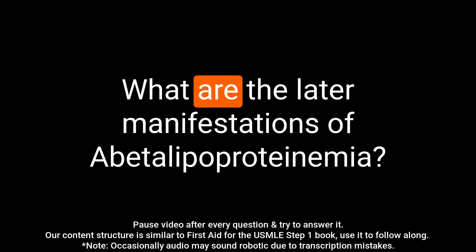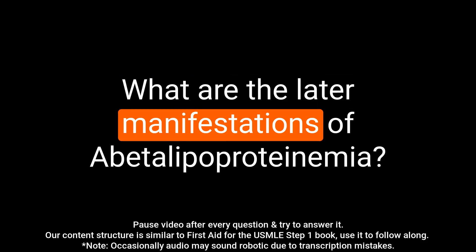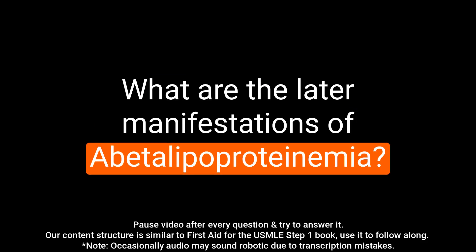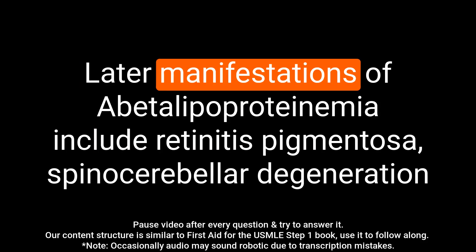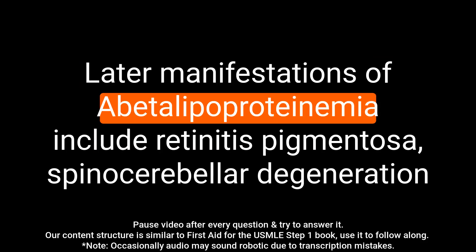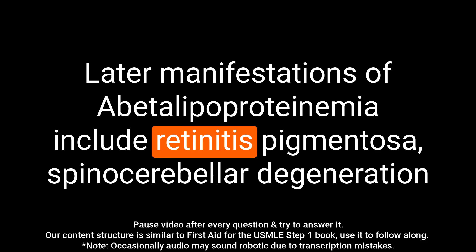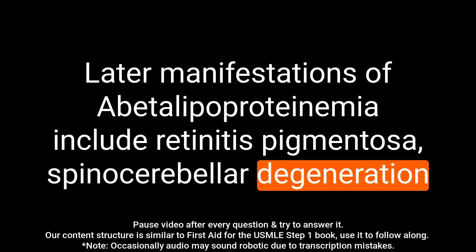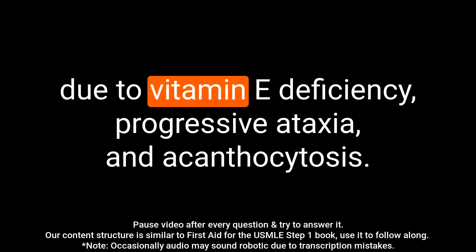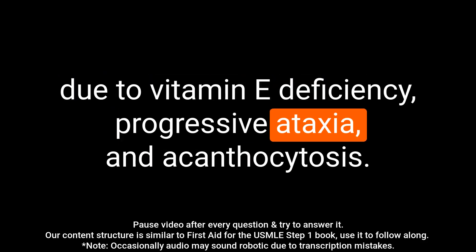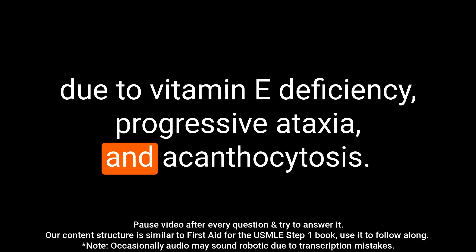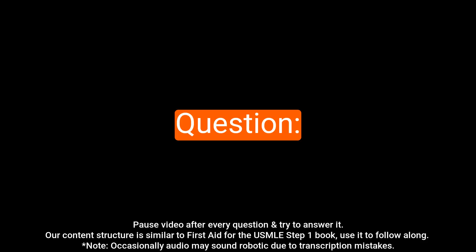Question: What are the later manifestations of abetalipoproteinemia? Answer: Later manifestations of abetalipoproteinemia include retinitis pigmentosa, spinocerebellar degeneration due to vitamin E deficiency, progressive ataxia, and acanthocytosis.